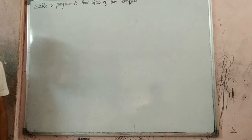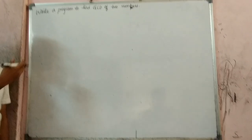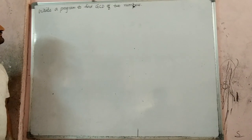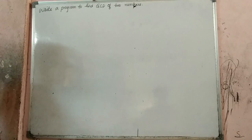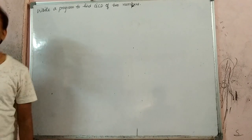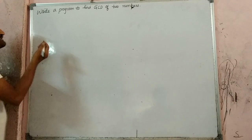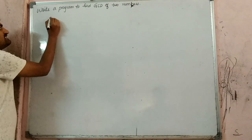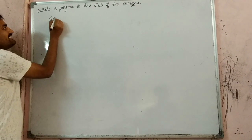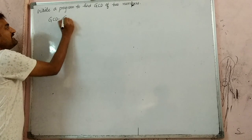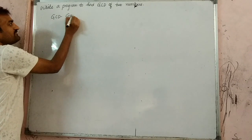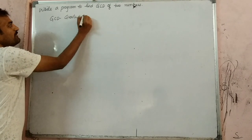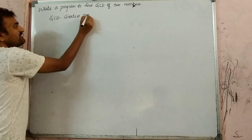So this is to find a program — write a program to find GCD of two numbers. So what is GCD? GCD is the greatest common divisor.